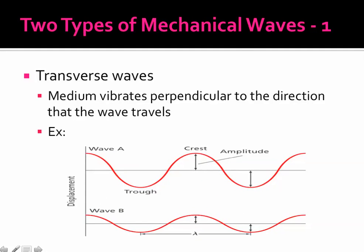And this is an example of transverse waves. This low point is called the trough. The high point is called the crest. The amplitude is how much it moves off of its rest point.